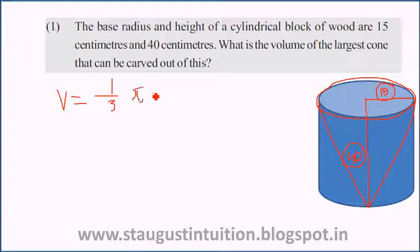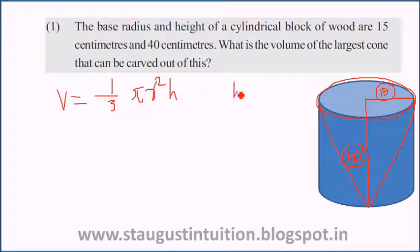The volume of a cone is equal to one-third π r² into height. Here, height is 40.